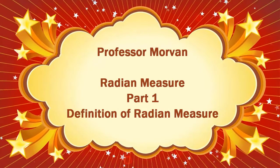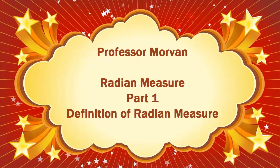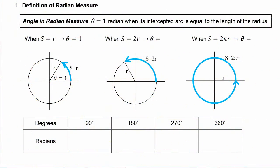In part one of our lesson on radian measure, you're going to learn the definition of radian measure. For an angle in radian measure, we say θ = 1 radian when its intercepted arc is equal to the length of the radius.